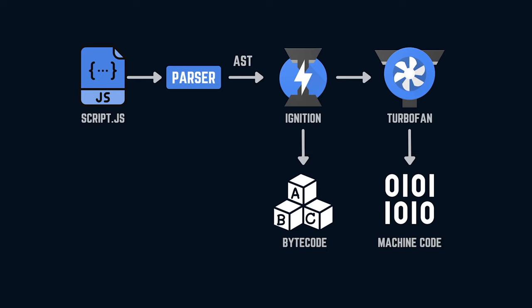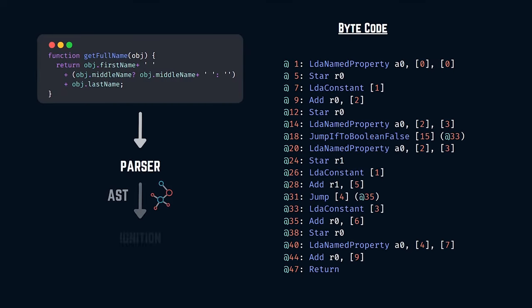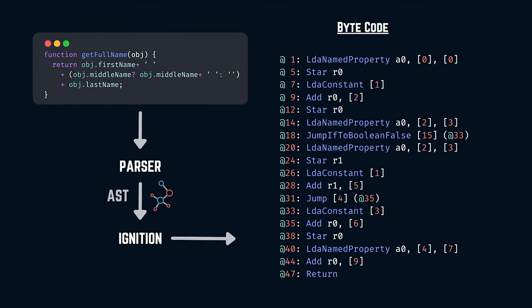The output from the ignition interpreter is a bytecode, where all operations are specified with commands similar to assembly language. The generated bytecode is more concise than the previous full code gen output. To execute the program, this bytecode is interpreted by an interpreter that carries out what the instructions imply — that's how a statement gets executed in the V8 engine.